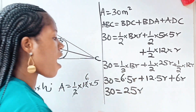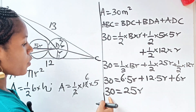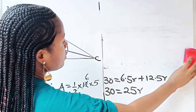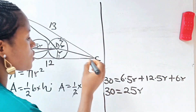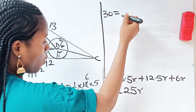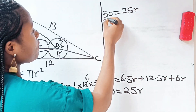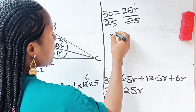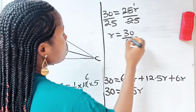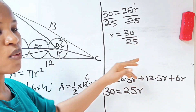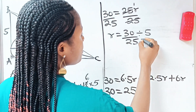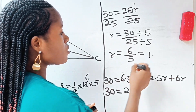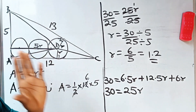To get the value of R, we divide both sides of this equation by 25. So R equals 30 divided by 25. Let's reduce this to lowest terms by dividing by 5: R equals 6 over 5, which is equal to 1.2. That is the radius of each of these circles.